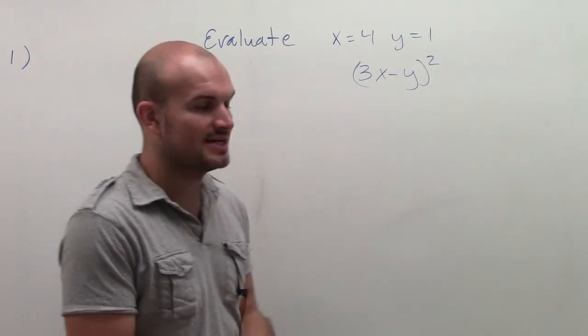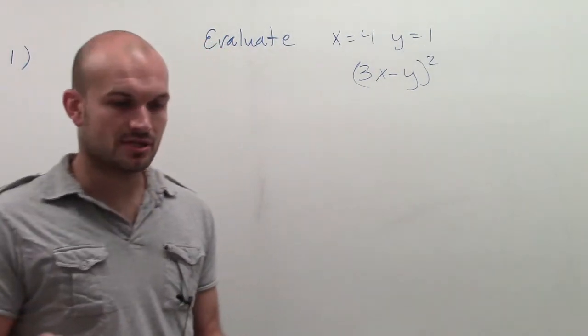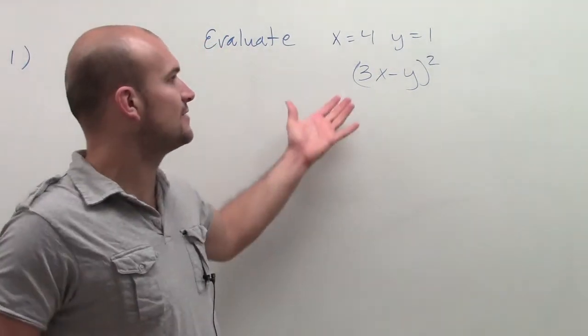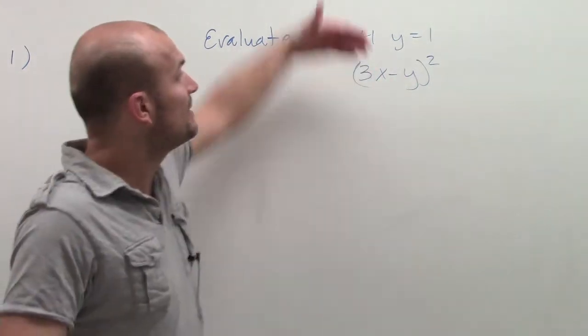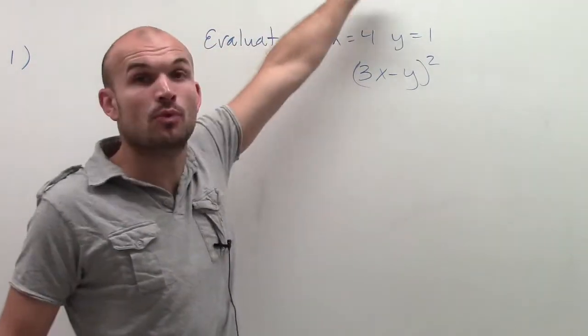So what I need to do is when evaluating them, there's a couple things. Now, at first when I said 3 times a number, I didn't know the value of the number. Then I said minus another number. I didn't know the value of that number. But now I'm telling you what those values are.